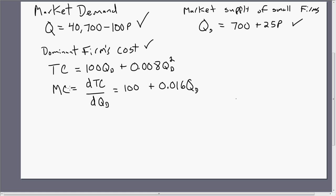From the total cost equation, we can get marginal cost, taking the derivative of total cost with respect to the dominant firm or the price leadership firm's output. We're left with this equation.